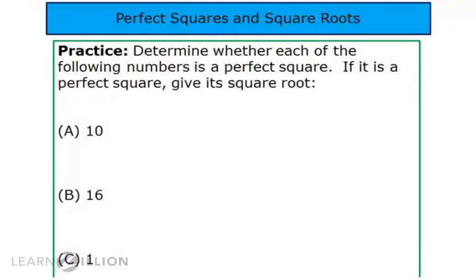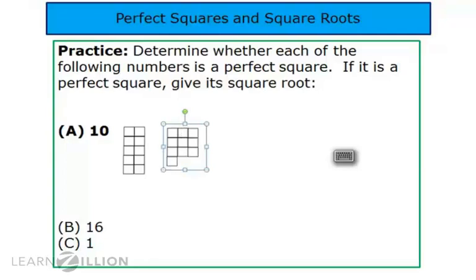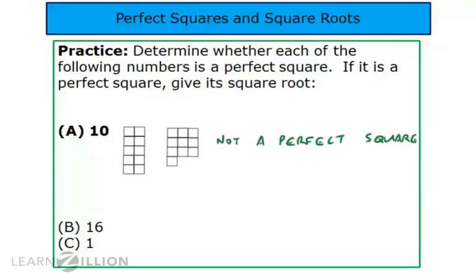Let's try a few practice problems. Here we're going to determine whether each of the following numbers is a perfect square, and if it is, we're going to give its square root. The first number is ten. Take ten unit squares — can you form a square out of that? I sure couldn't. I was able to get a two-by-five rectangle and this other shape, but I could not get a perfect square. Therefore, ten is not a perfect square.